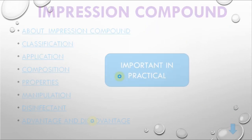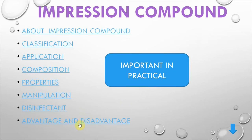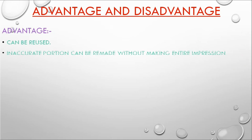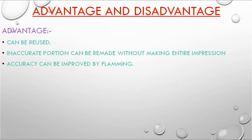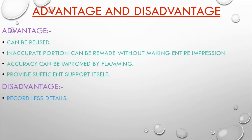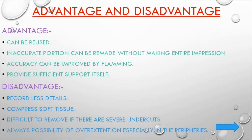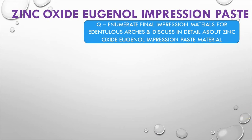Advantages of impression compound: can be reused; particular parts can be repaired without remaking the entire impression; accuracy can be improved by flaming; provides sufficient support itself. Disadvantages: reproduces less detail; compresses soft tissue (muco-compressive impression); difficult to remove from undercuts; always a possibility of overextension, especially in peripheries.